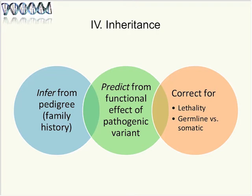Modes of inheritance can be inferred from a pedigree or family history tree, or predicted from the functional effect of a pathogenic variant. You may need to correct for lethality — if a dominant disorder is lethal in young life, it won't appear as a transmitted pattern in a family because the affected person died before passing it on. You also need to distinguish germline inherited disease from somatic mutations found only in tumors, where inheritance patterns are irrelevant.